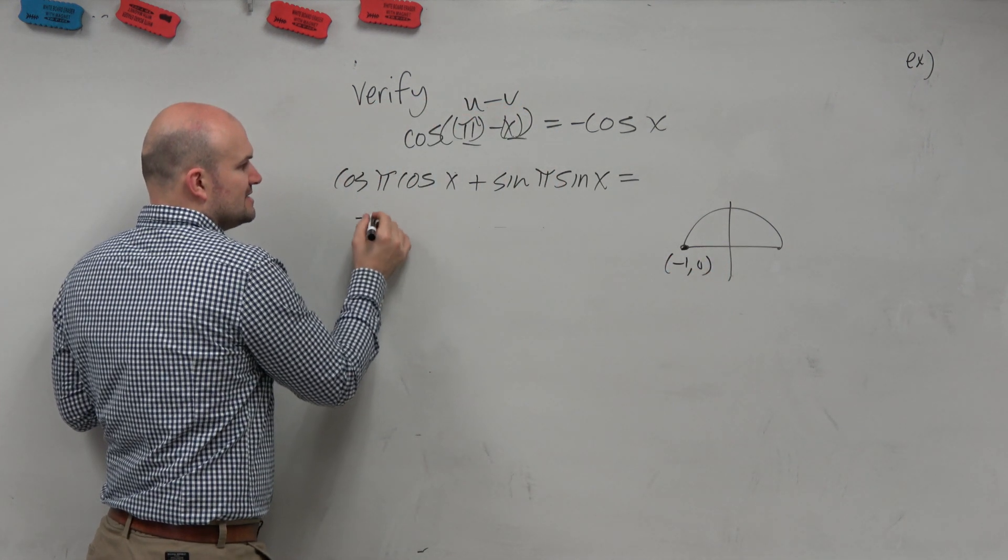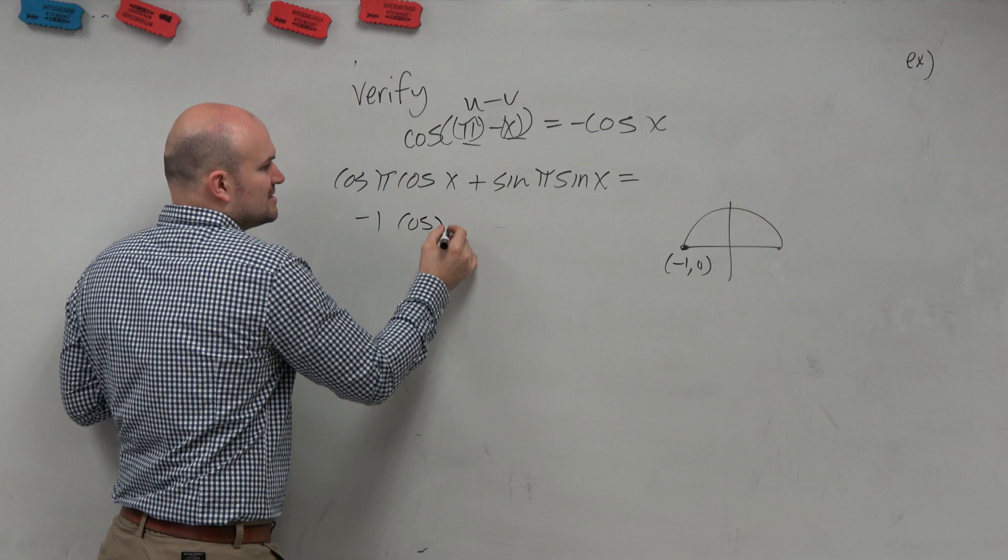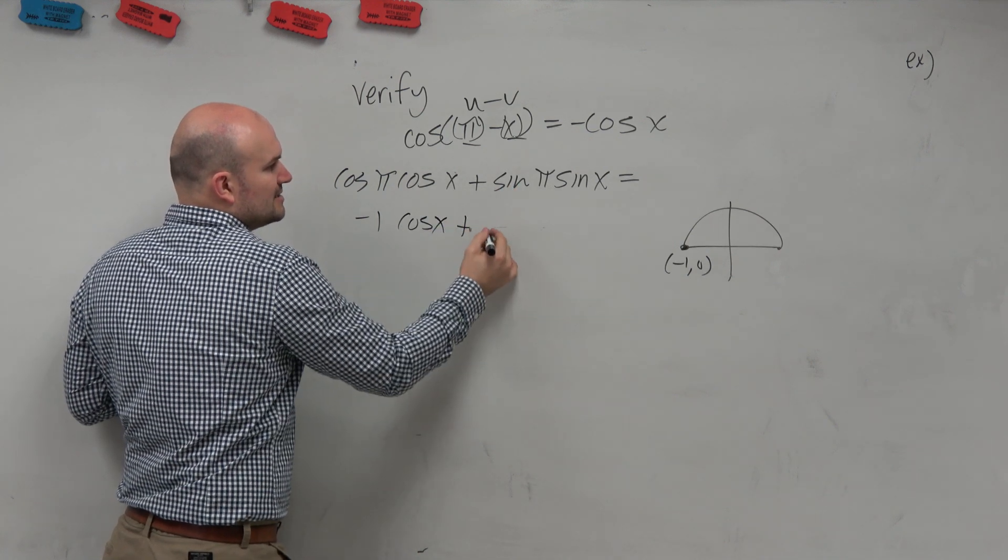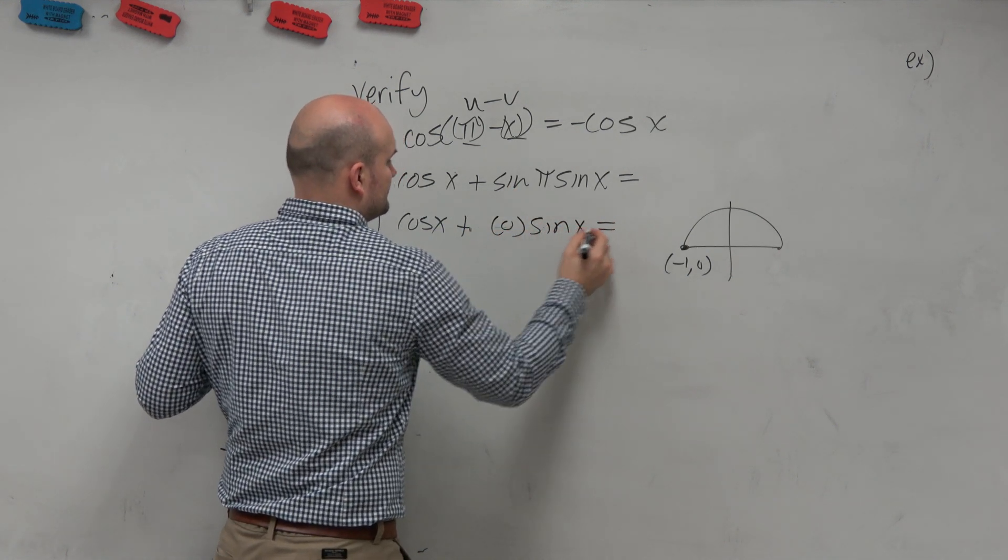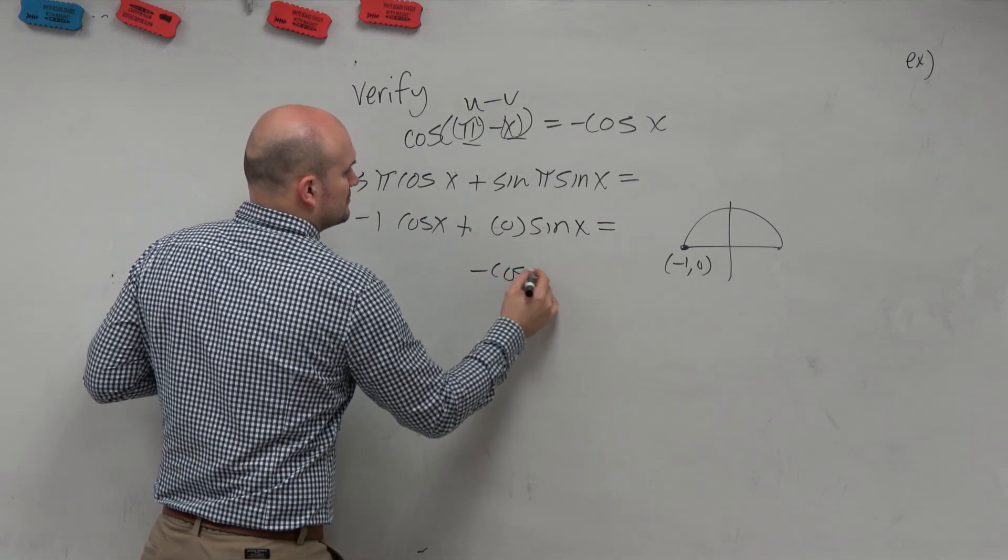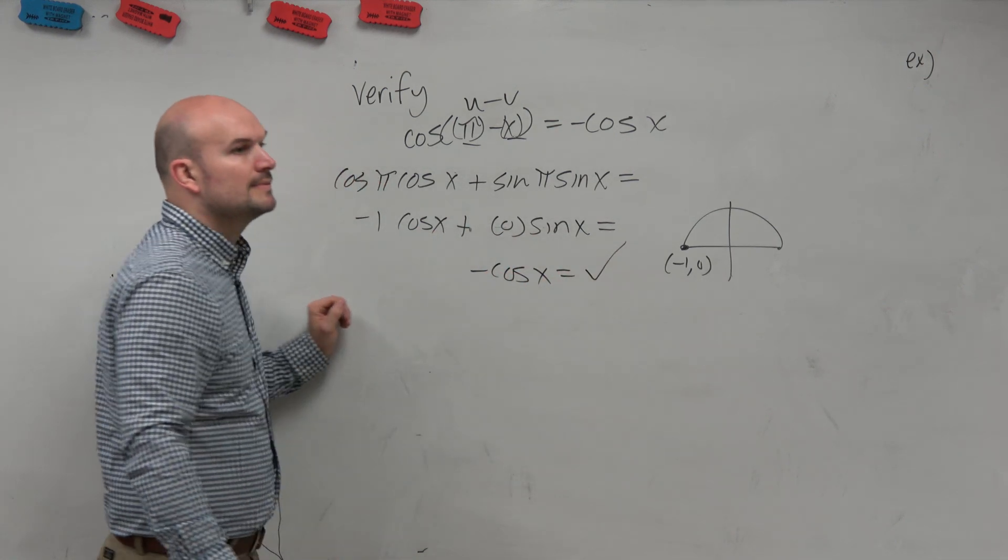So the cosine is negative 1 times cosine of x. Sine of π is 0 times sine of x. There you go.